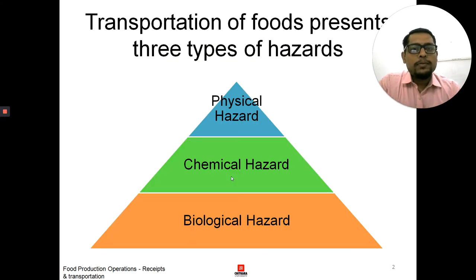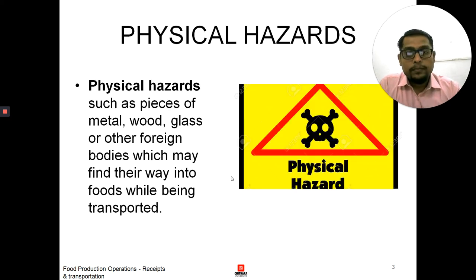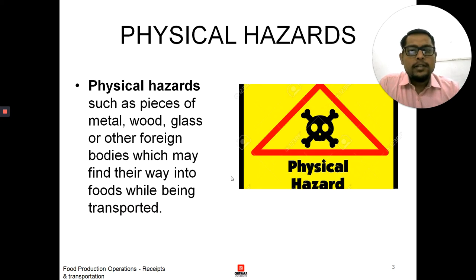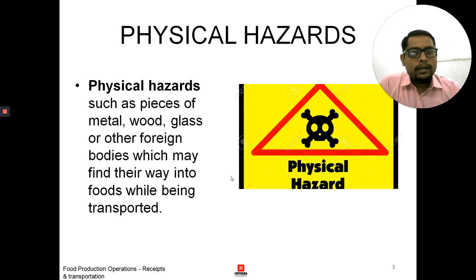Whenever we talk about transportation of food, it presents three types of hazards. The first is physical hazard, the second is chemical hazard, and the third is a biological hazard. Physical hazards such as a piece of metal, wood, glass, or any other foreign body which may find their way into the food while being transported come under the heading of physical hazard. Any solid body which somehow finds its way inside the food would be a physical hazard that can contaminate the food.